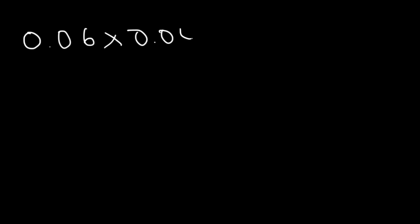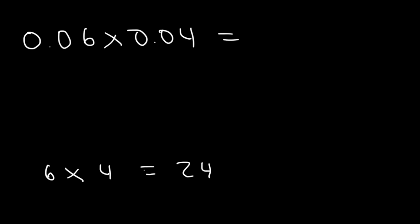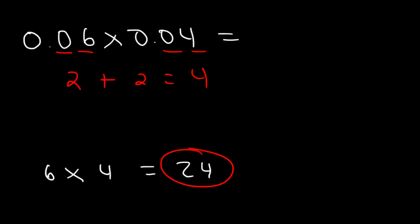How can we multiply 0.06 times 0.04 mentally? Well, first, what is 6 times 4? You know that 6 times 4 is 24. Next, look at how many digits you have. In the first number, there are two digits to the right of the decimal point, and the same is true for the second number. When you're multiplying, add these two digits: 2 plus 2 is 4. So your final answer should contain four digits after the decimal point, and you need a 2 and 4 as well. So because 6 times 4 is 24, 0.06 times 0.04 is going to be 0.0024.